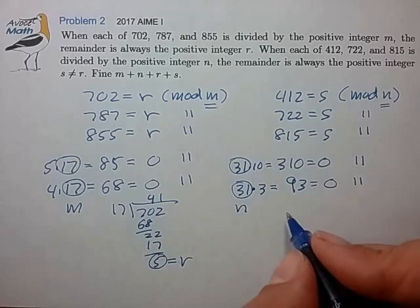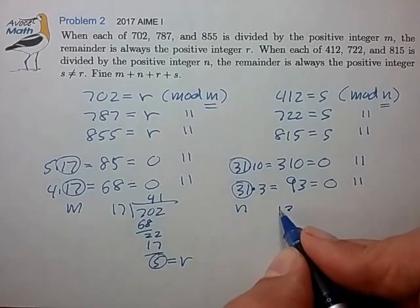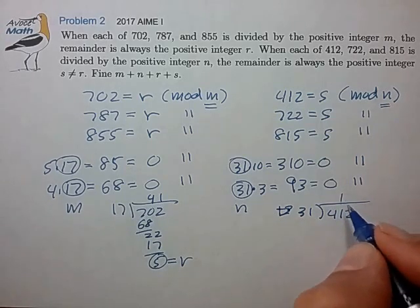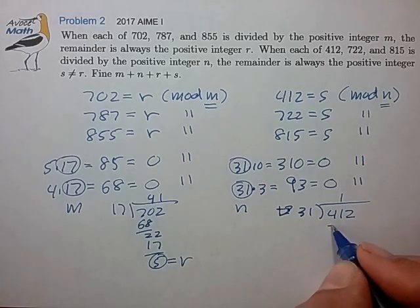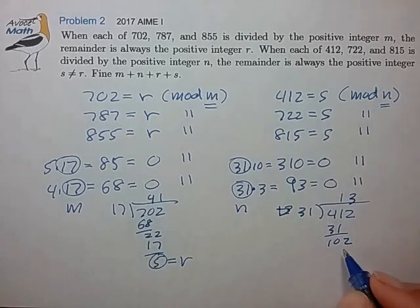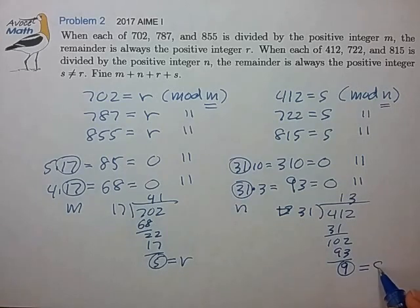Let's do the same thing over here. Let's divide 31 into 412. That's 1, 31, 3, 93, remainder of 9. And that's equal to s.